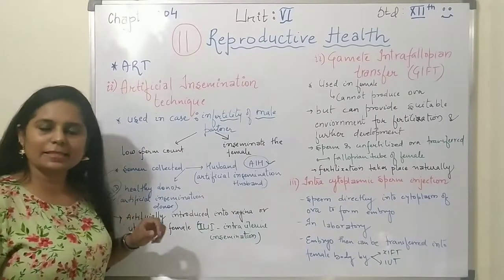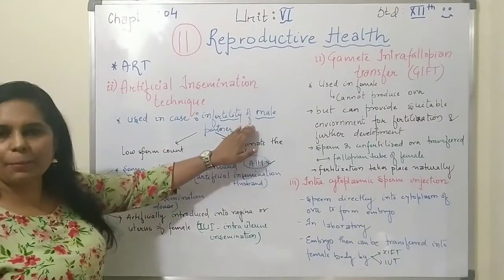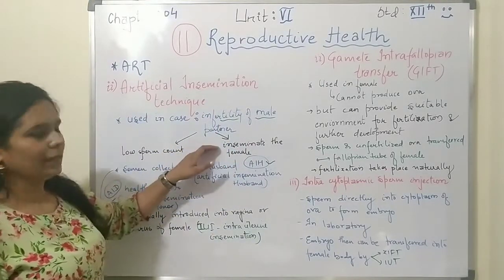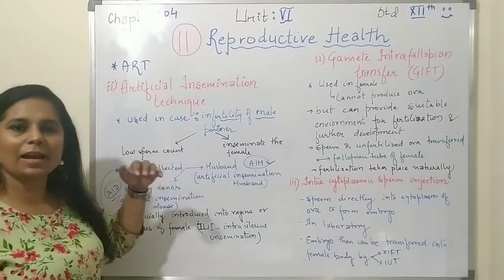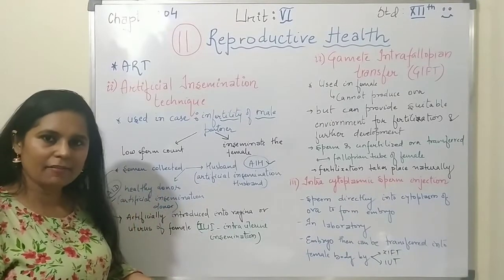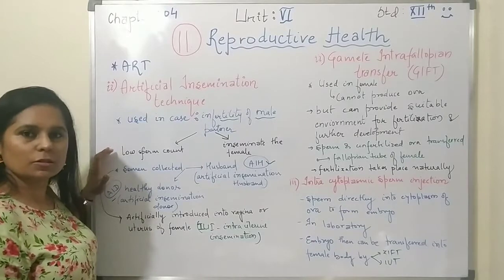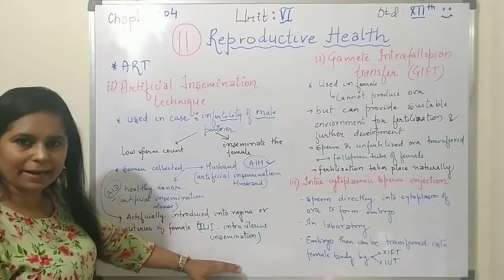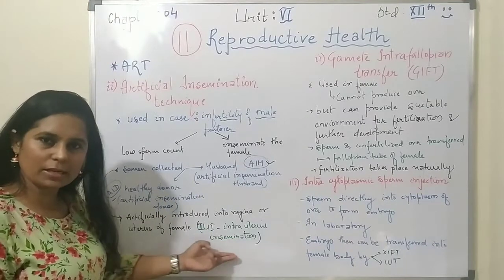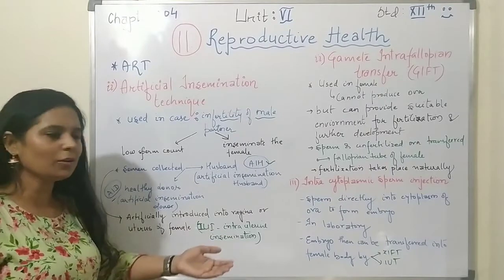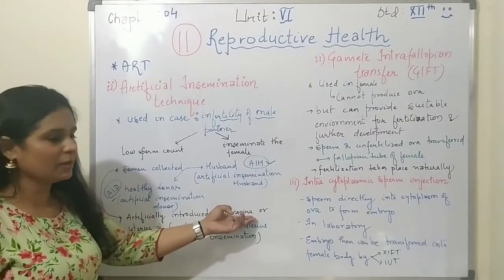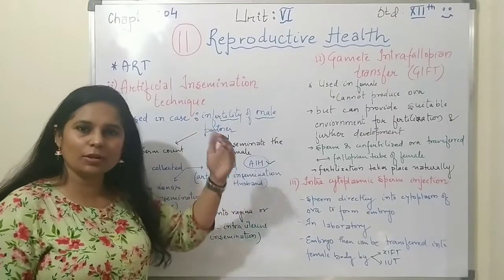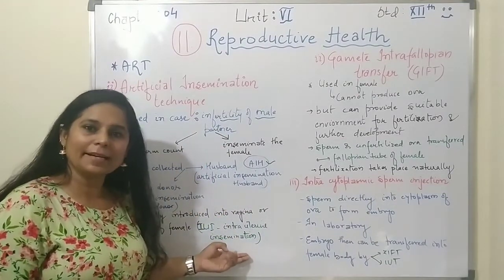Artificial insemination technique is used when the male partner is infertile due to low sperm count or inability to inseminate. The sperm, taken from the husband or a healthy donor, is injected into the female body. If transferred directly to the uterus, it is called intrauterine insemination — the IUI technique. Transferring through the uterus rather than the vagina improves the chances of fertilization.